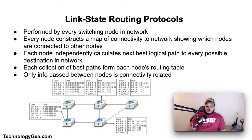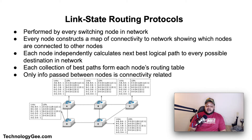Next, let's talk about link state routing protocols. Link state routing protocols are one of the two main classes of routing protocols used in packet switching networks for computer communications — the other being distance vector routing protocols. The link state protocol is performed by every switching node in the network. The basic concept of link state routing is that every node constructs a map of the connectivity to the network in the form of a graph, showing which nodes are connected to which other nodes. Each node then independently calculates the next best logical path from it to every possible destination in the network.